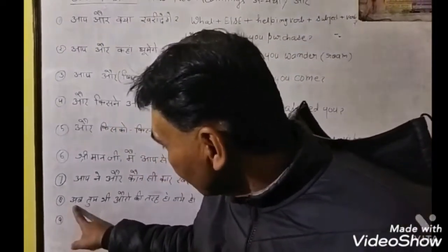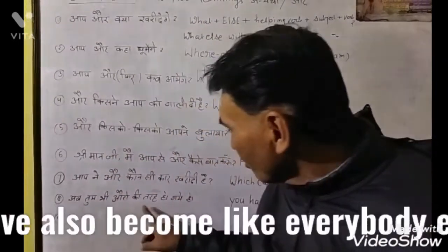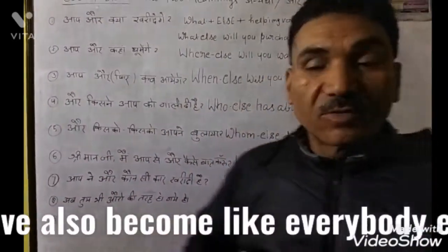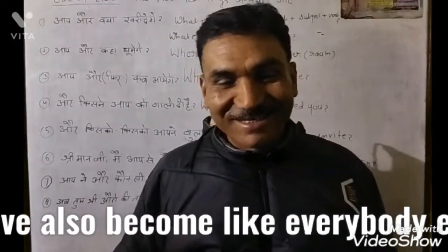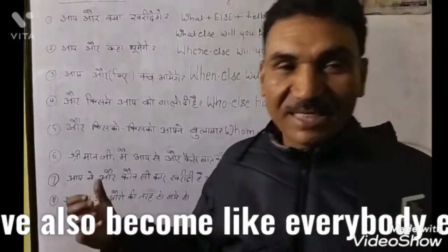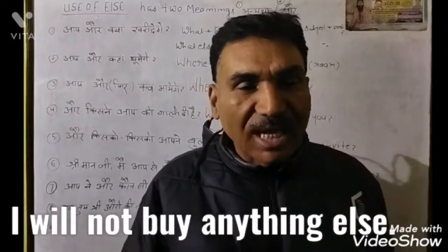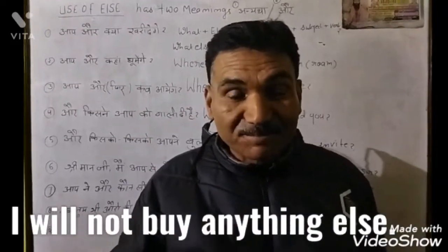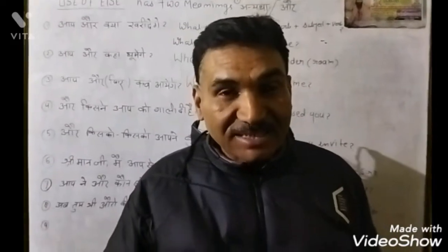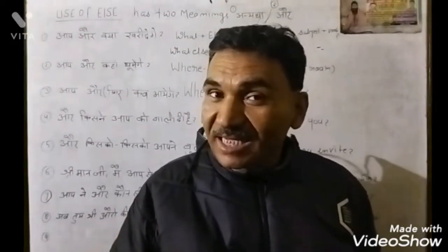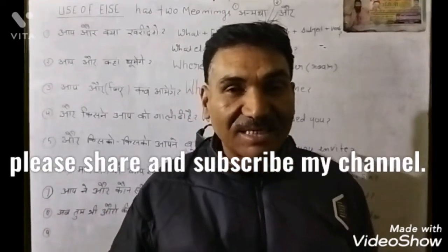Now the last one: अब तुम भी औरों की तरह हो गए हो। — 'Now you have also become like everybody else.' I hope this is clear. इसमें बहुत सारे sentences आते हैं — मैं और कुछ नहीं खरीदूँगा: 'I will not buy anything else.' क्या आपने कुछ और खरीदा: 'Have you bought anything else?' नहीं, मैंने और कुछ नहीं देखा: 'I have not seen anything else.' इस type के बहुत सारे sentences लग सकते हैं।